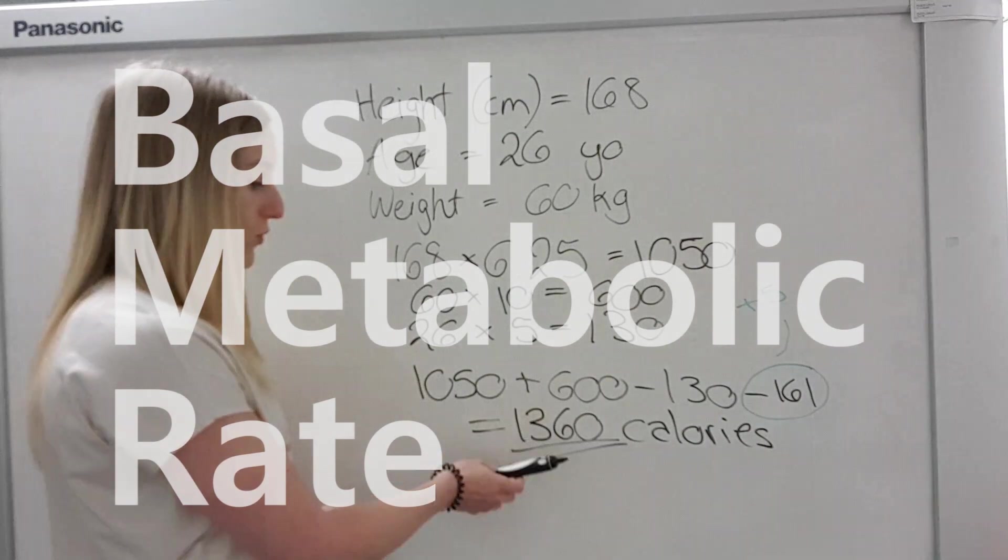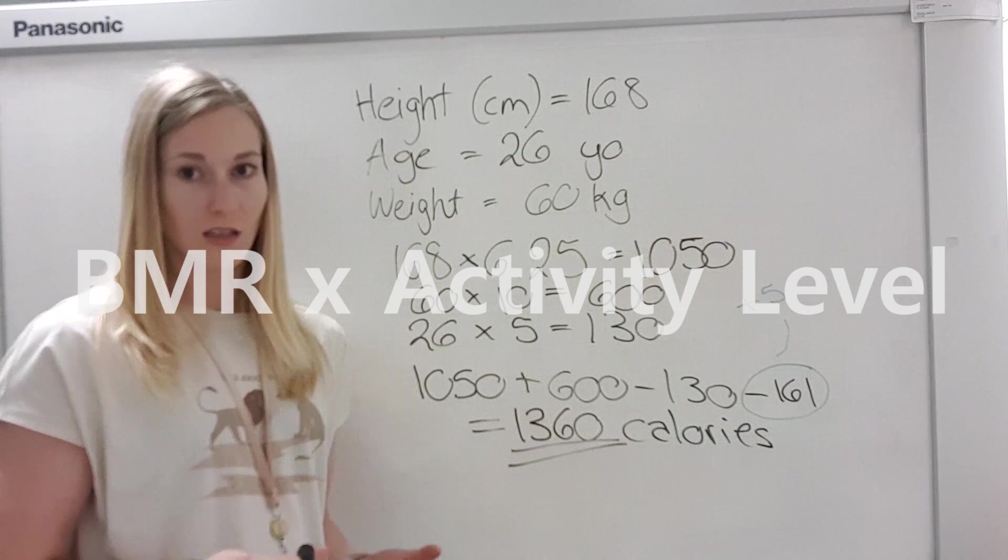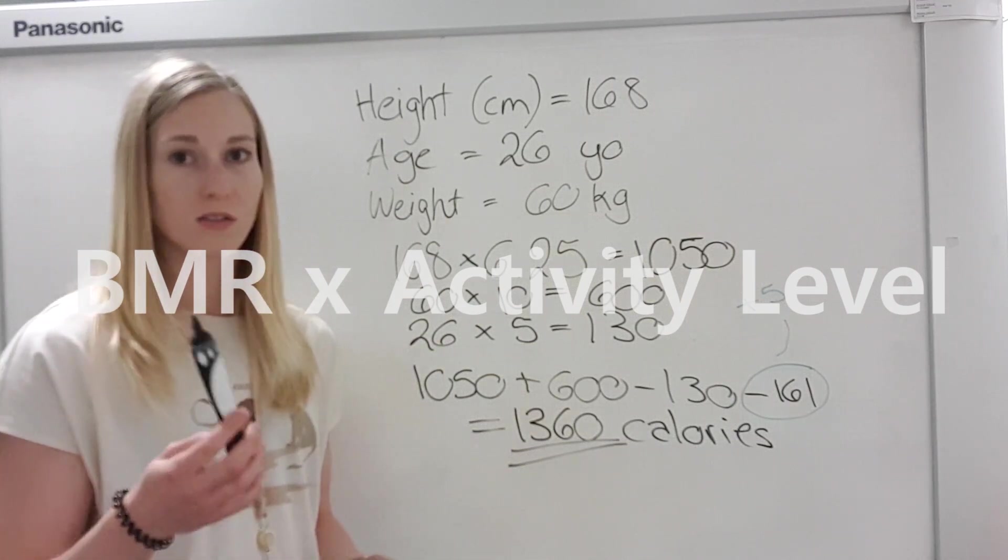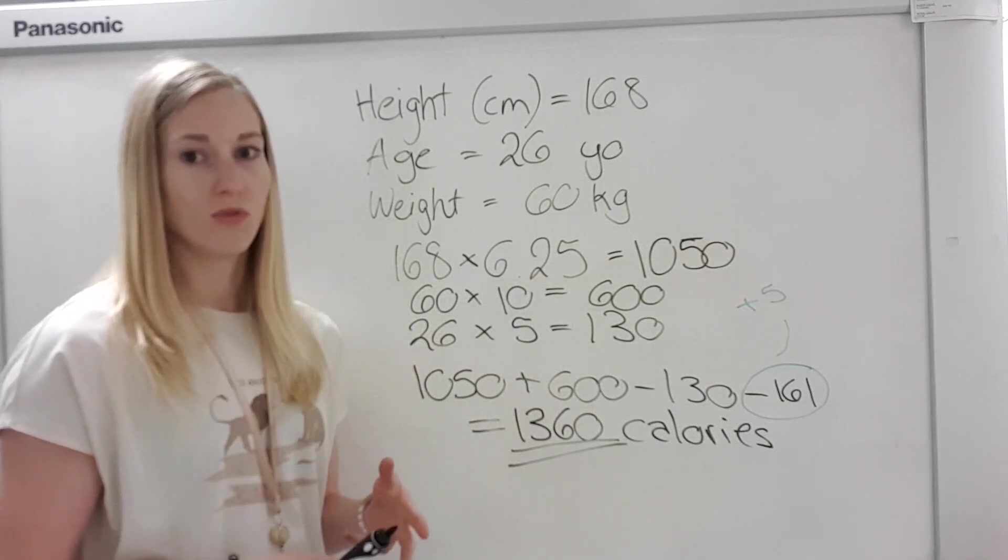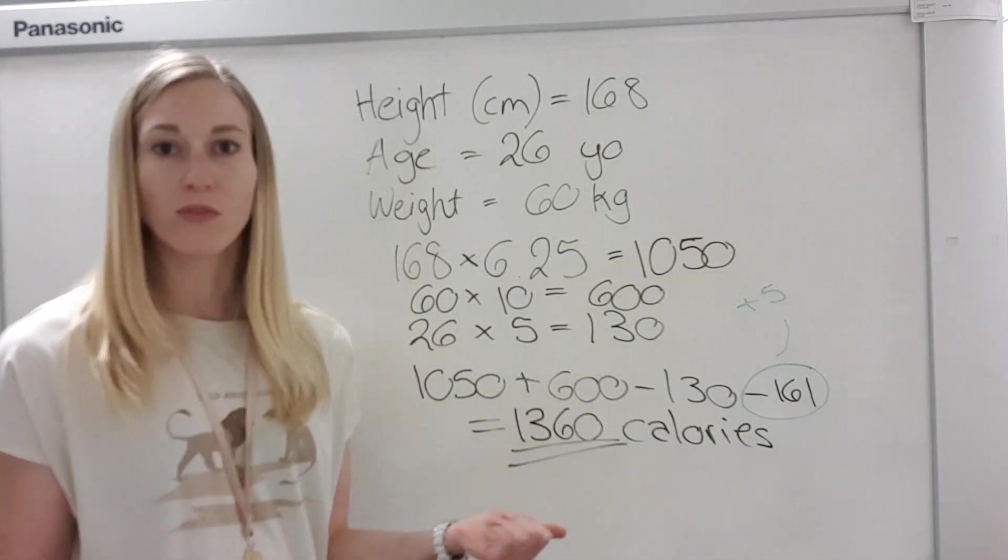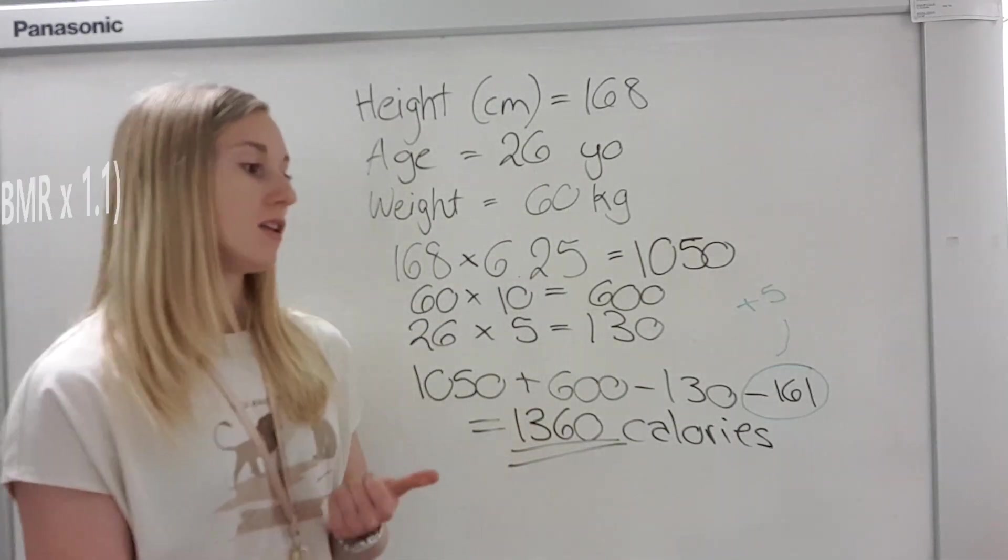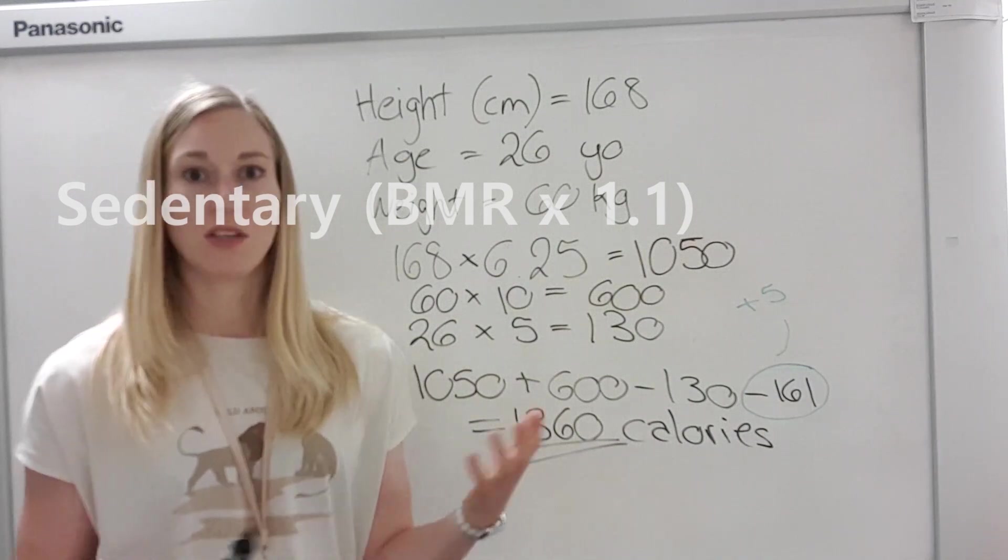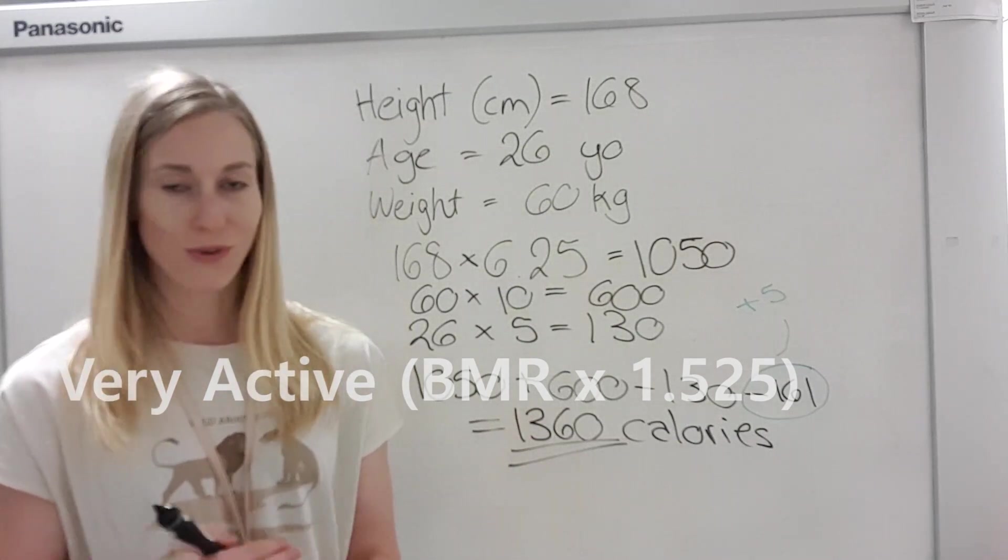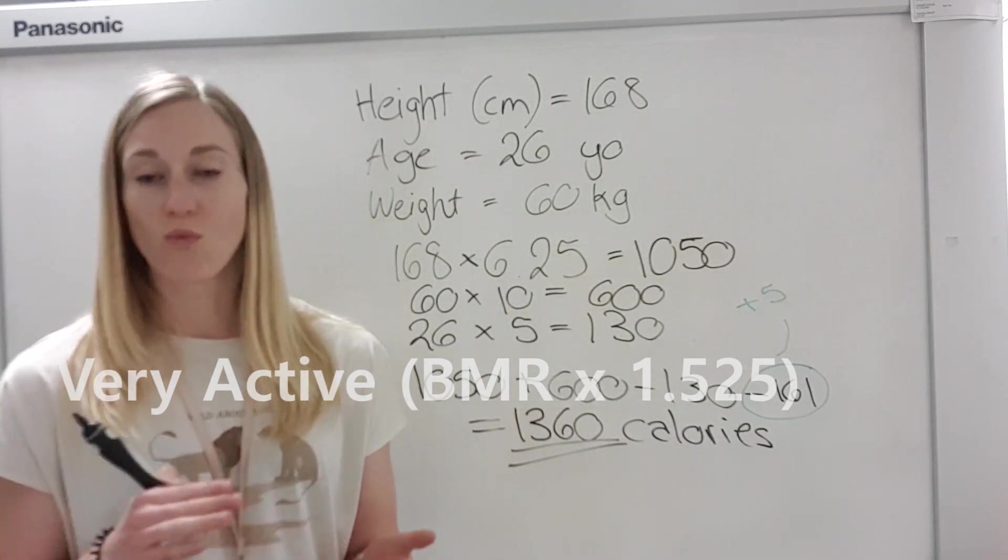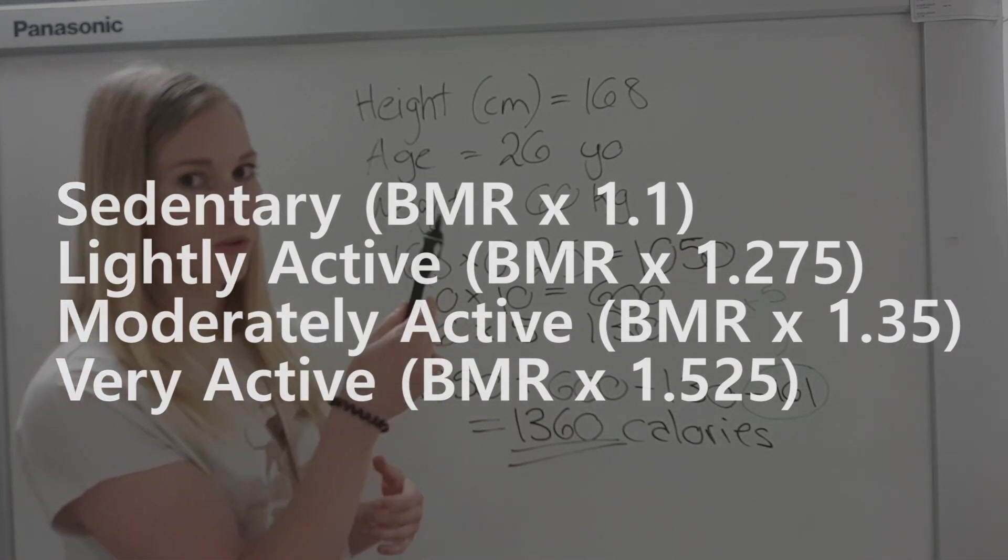So now we want to also include our activity level. So we want to do this times our activity level. And there's different numbers for that one. So if you're sedentary and you don't do much during the day, you may be sitting most of the day because you have an office job or something like that, and you don't really exercise, you're going to do one times 1.1. But if you're a really, really active person or an athlete or something, you may use times 1.525. So it depends where you're at. I'm going to put the numbers up on the screen.